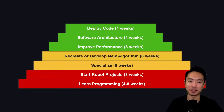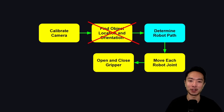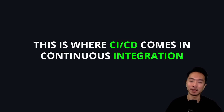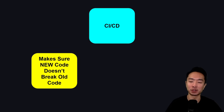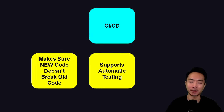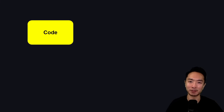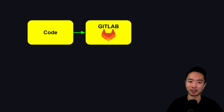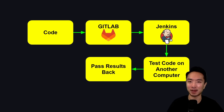The final step is to look at deployments. Spend about four weeks here. If you make changes to the determined robot path, you might find that the find-object-location step breaks, and then the move-each-robot-joint step breaks. This is where CI/CD — continuous integration, continuous deployment — comes in. CI/CD makes sure new code doesn't break the old code, supports automatic testing, and guarantees code is always ready for use. Typically, code lives inside GitLab, Jenkins tests it on another computer, and results are passed back for the user to see.